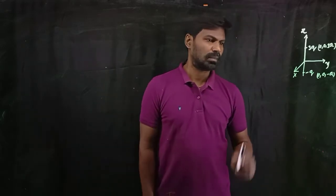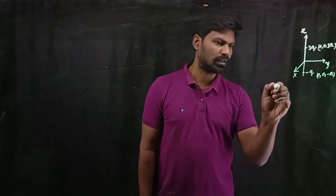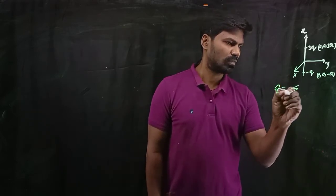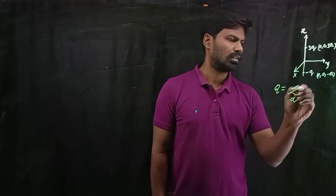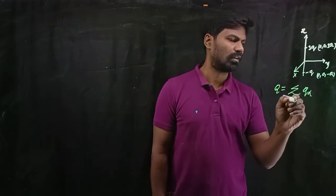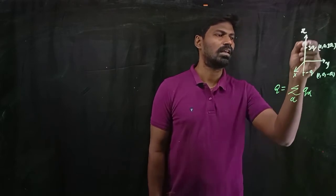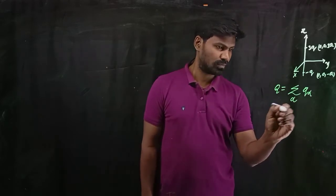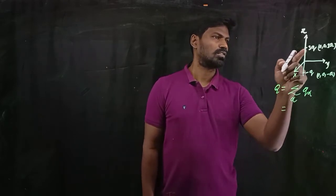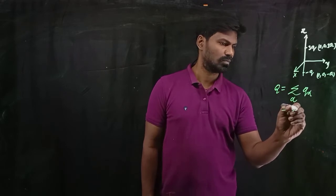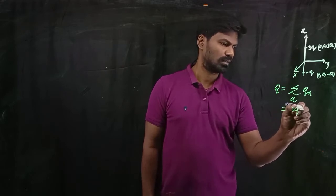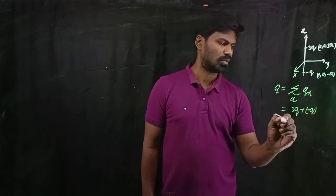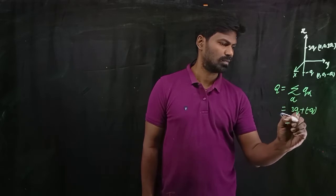From multipole expansion, the monopole moment, which I represent as capital Q, is equal to the summation over alpha of Q_alpha, where alpha runs from 1 to N, the number of charges. When alpha equals 1, charge Q1 is 3Q. Plus when alpha equals 2, the second charge is minus Q. So the total monopole moment is 2Q.